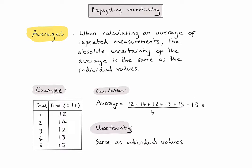My average can be written as 13 seconds plus or minus one second. Converting that absolute uncertainty into a percentage uncertainty gives plus or minus 8%. In this case, the fairly large percentage uncertainty might indicate that I should try to use more precise measurement equipment if I were to repeat this experiment.